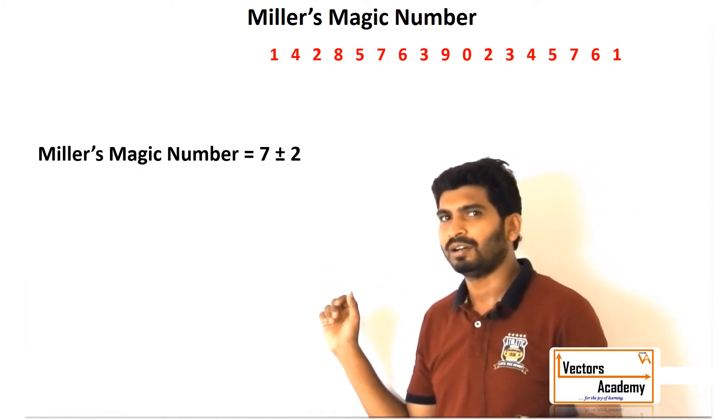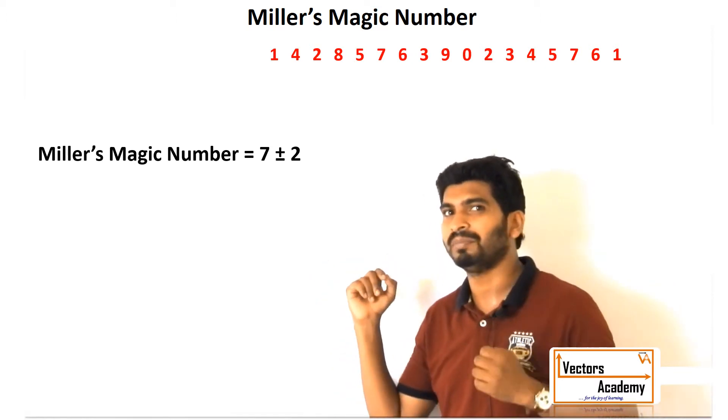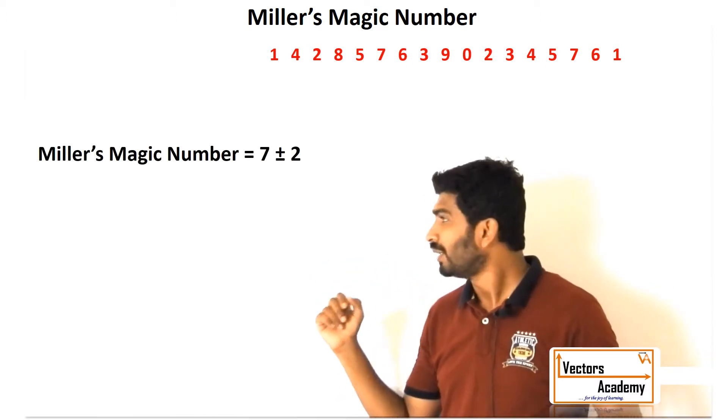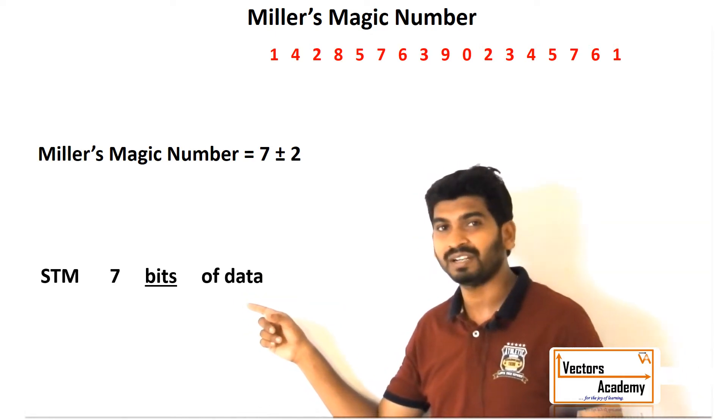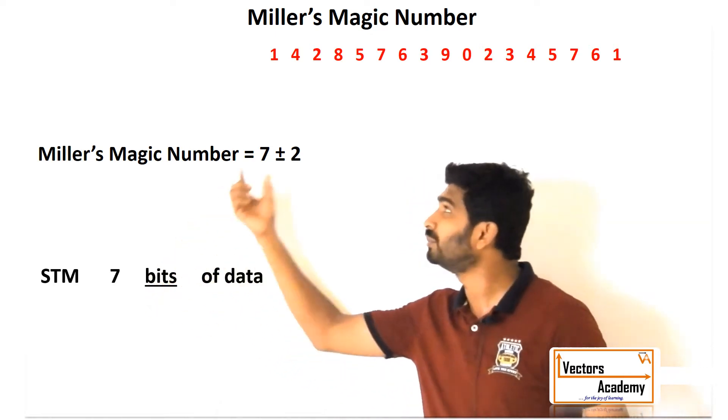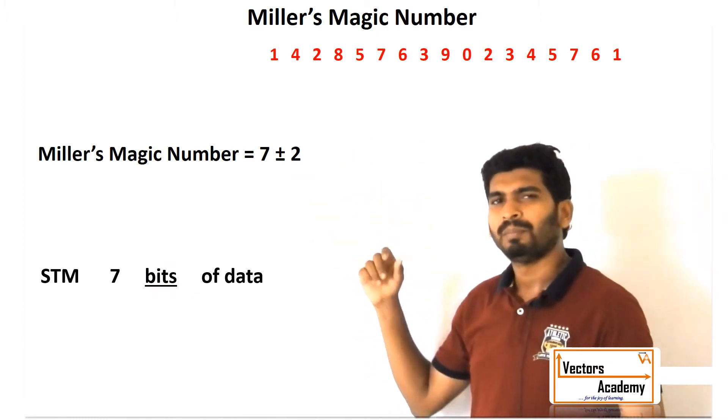Remember in the previous video I told you the short-term memory can store seven bits of data. This word 'bits' actually means numbers, but this is not that easy.